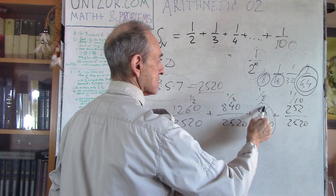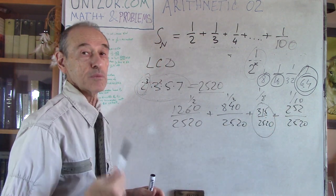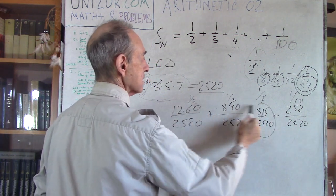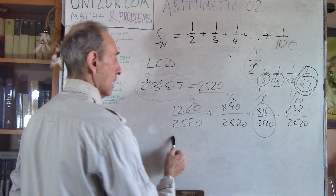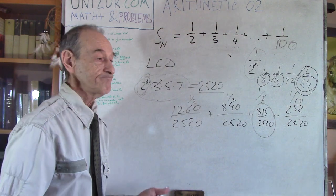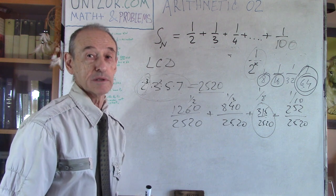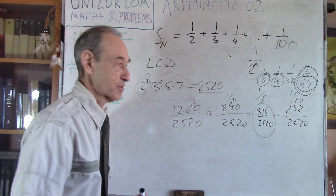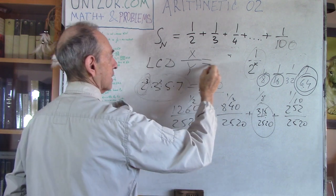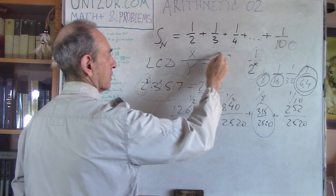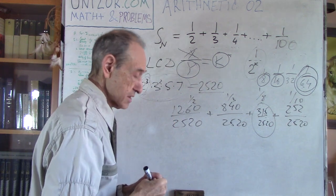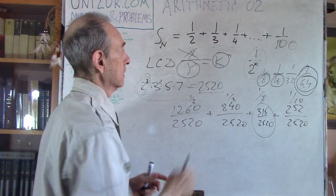If we have all even numerators and only one odd one, their sum is odd. So the numerator of the entire sum — when we add all numerators together — is odd, but the denominator is clearly even, because it contains factors of 2. An odd number cannot be divided by an even number to yield an integer, because an integer multiplied by an even number gives an even result, not an odd one. That's the proof that this sum is not an integer.